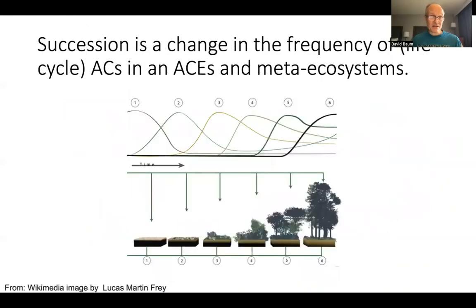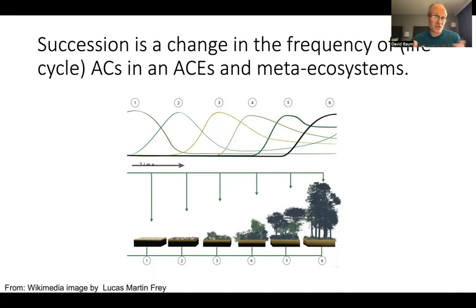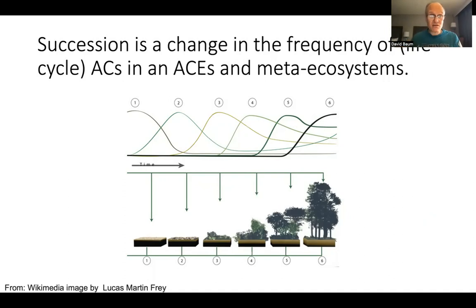Something similar can happen in succession. If we think about a meta-ecosystem, each local ecosystem undergoes occasional seeding events that trigger a new species' life cycle. Over time, the frequencies of different species or cycles can change. This change could be shaped largely by chance, but certain species or combinations of species can make the ecosystem resistant to disturbance. As a result, there's something analogous to selection happening at this level too.